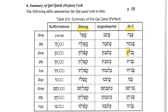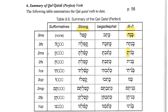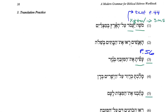The root for the paradigm three-hey verb here is bana — bet, nun, hey. In some forms, the hey drops off and is replaced by a yod. Second masculine singular is one of those examples: banita. Coming back to our exercise, this is a second masculine singular form and the root is going to be asa — ayin, sin, and hey. Asa is the root meaning 'to make' or 'to do.'